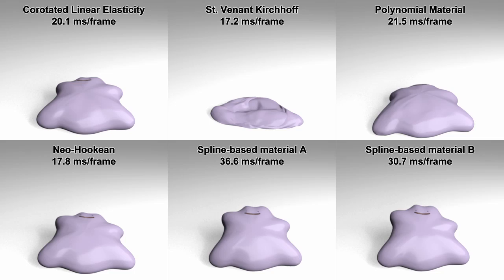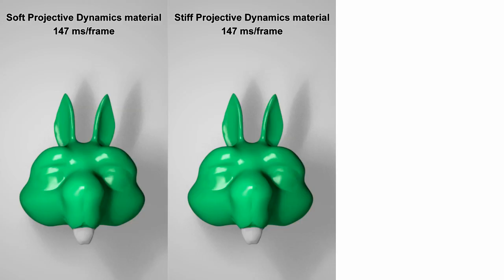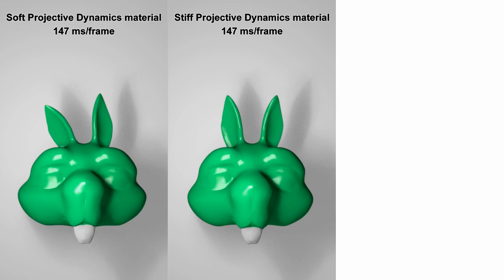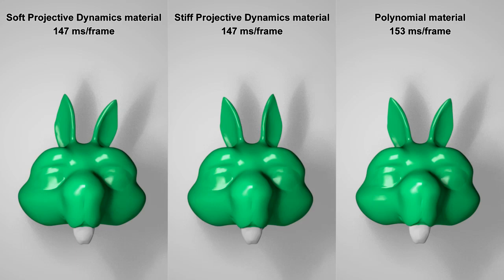Fast simulations can be achieved using methods such as projective dynamics. Unfortunately, projective dynamics supports only basic material models with limited flexibility. Our method supports more expressive materials, such as this polynomial model, which makes it easy to achieve the desired animation effect.